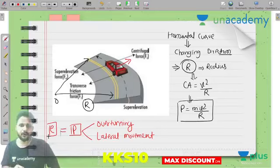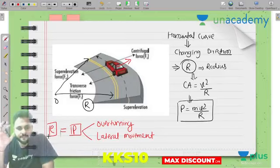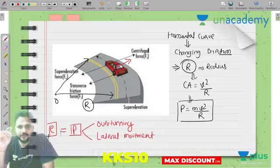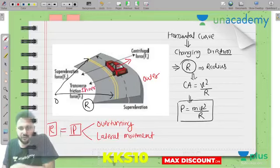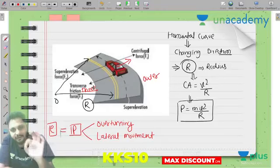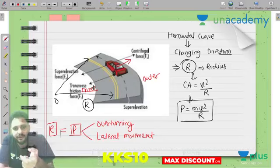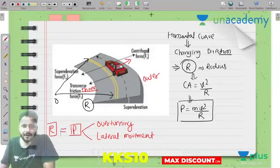This lateral movement will be in the outward direction and create discomfort. To overcome these problems - the overturning effect and lateral movement effect - we provide super elevation. Super elevation, banking, cant all mean the same thing. The main concept is: this is the outer edge of the road and this is the inner edge. We have provided the outer edge at higher elevation with respect to the inner edge. By providing the outer edge at higher elevation, you can sort out the overturning and lateral movement problems in highways. This concept is called super elevation.